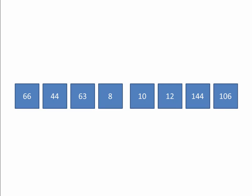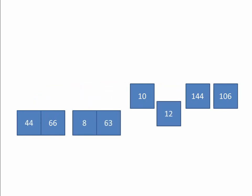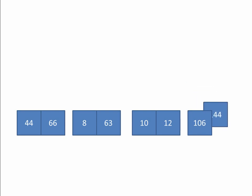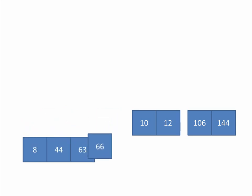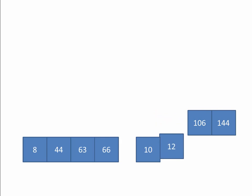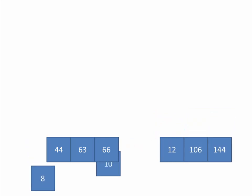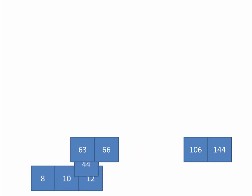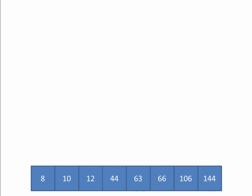We can now start merging pairs of lists back together again, sorting as we go. Starting with the first pair, then the next, and the next, and the next — we merge pairs of lists together, sorting as we go. And finally, the last pair of lists, sorting as we go, and we end up with a single sorted list.